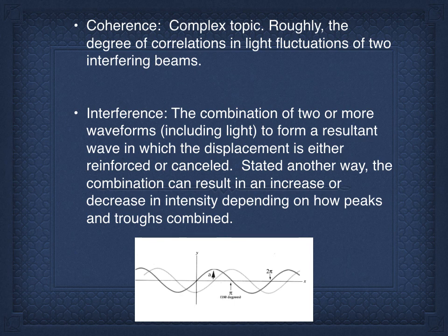Interference, when you combine two or more waveforms, the resultant displacement or amplitude is either reinforced or canceled. Stated another way, the combination either results in an increase or decrease in intensity, depending on alignment of peaks and troughs. If we look at the two cosine or sine waves in the bottom image, they're slightly out of phase. If it's completely out of phase, you'll get total destructive interference. If it's completely in phase, you'll get complete constructive interference, so the signal will be doubled.